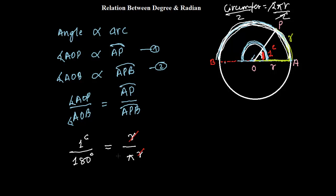And now what I'm going to get. This r and r can be cancelled. So, from here what I can say, 1 radian is equal to 180 degrees divided by π. This is the relationship between the 1 radian and degree.